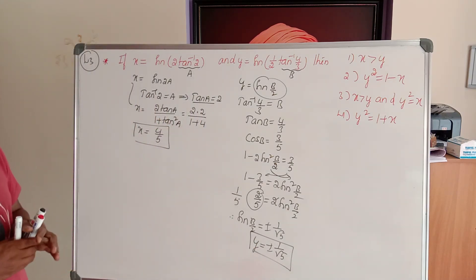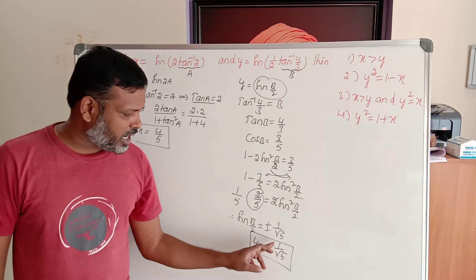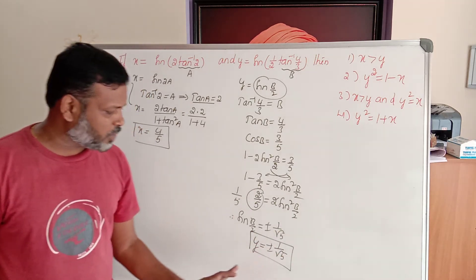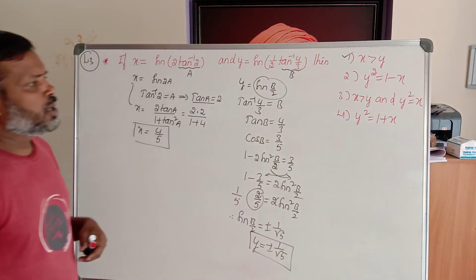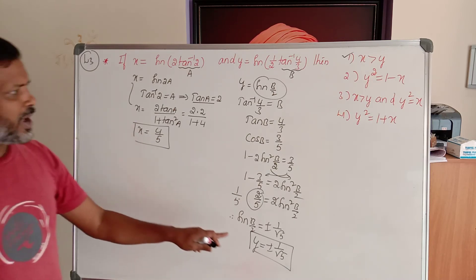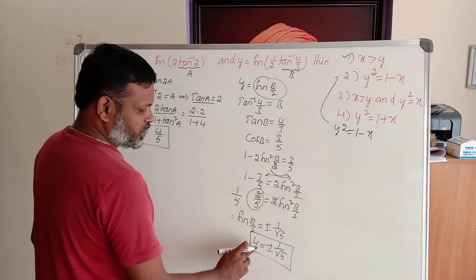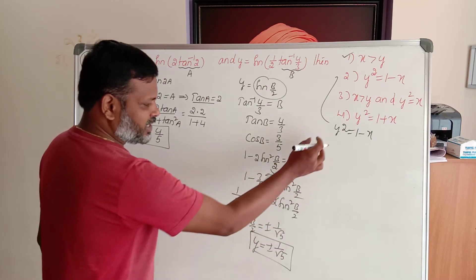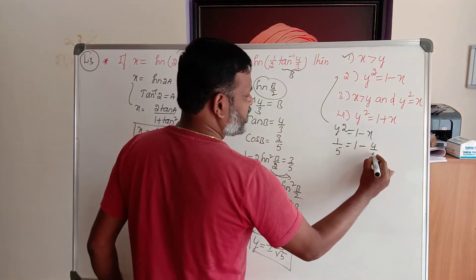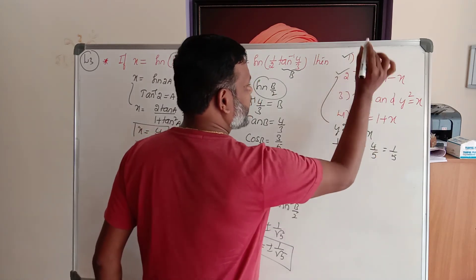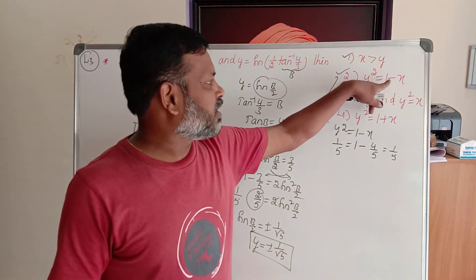Now we have x equals 4 by 5 and y equals plus or minus 1 by root 5. Checking the first option: x is greater than y. Since x equals 4 by 5 and y is plus or minus 1 by root 5, obviously x is greater than y — this satisfies. Checking the second option: y square equals 1 minus x. y square is 1 by 5, and 1 minus 4 by 5 is also 1 by 5. So the second option also satisfies.